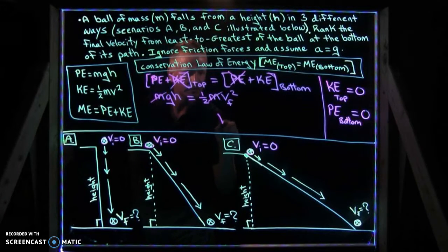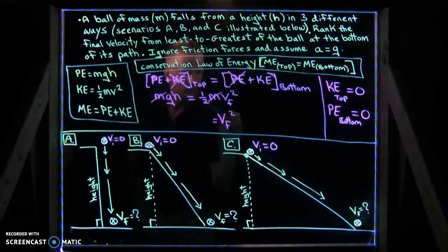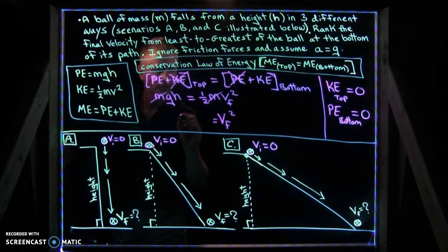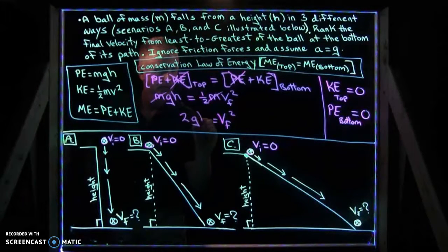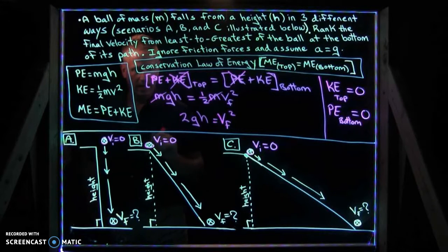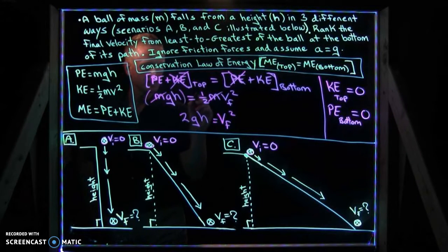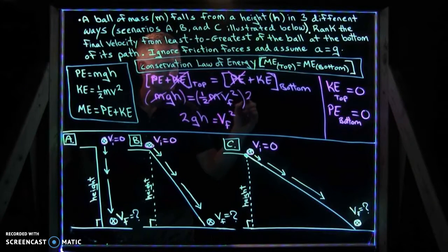Now, if you solve for the final velocity here, you will find out that the final velocity squared is now equal to 2gh. And we have that by simply multiplying both sides of this equation by 2.